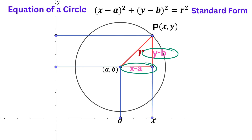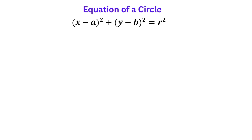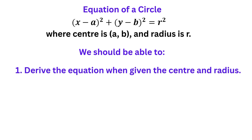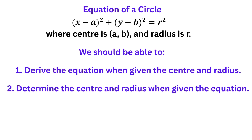This represents the general form for the equation of a circle, where the centre of the circle is (A, B) and the radius is R. Questions on this topic can come in one of two forms. You may be given the centre and radius of a circle and asked to derive its equation, or you may be given the equation of a circle and asked to determine its centre and radius.